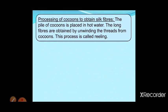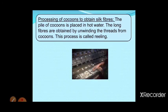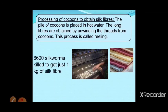Now, processing of the cocoon to obtain silk fiber: after collection, the cocoons are placed in hot water. The long fibers are obtained by unwinding the threads from the cocoon — this process is called reeling. To get at least one kilogram of silk fiber, we need to kill around 600 silkworms, which is unfortunate as we are taking the life of these insects to obtain this fabric.